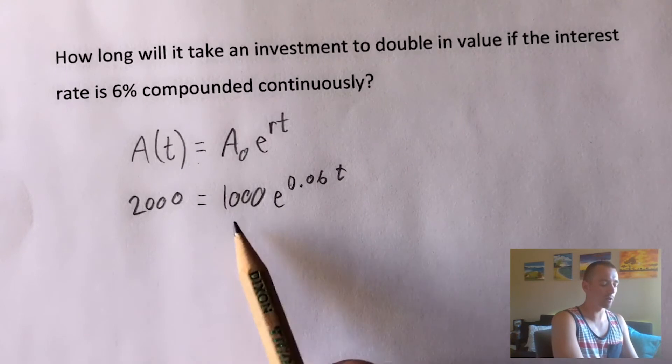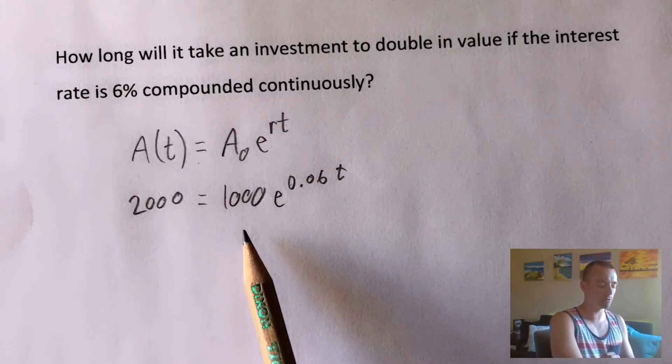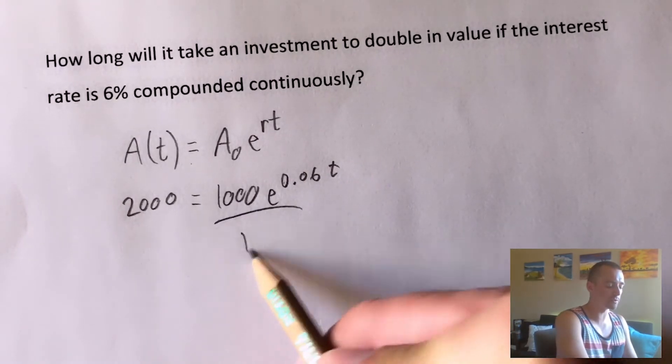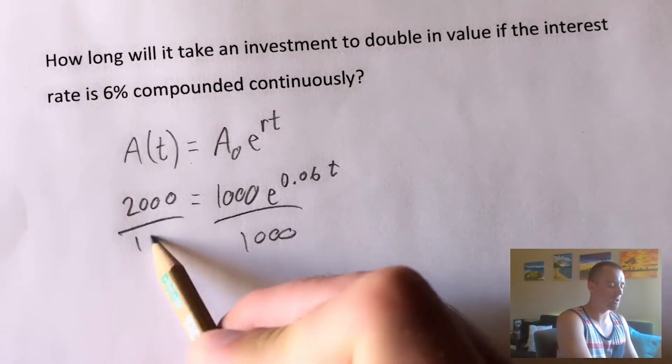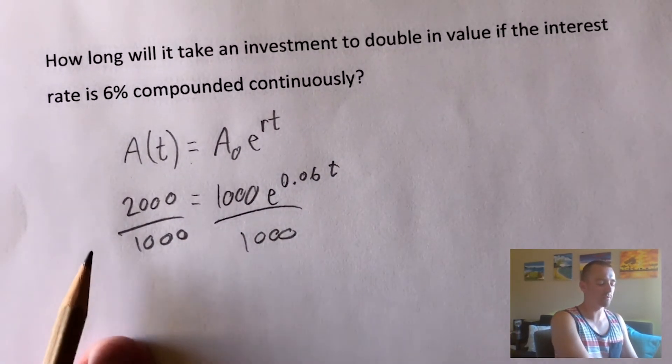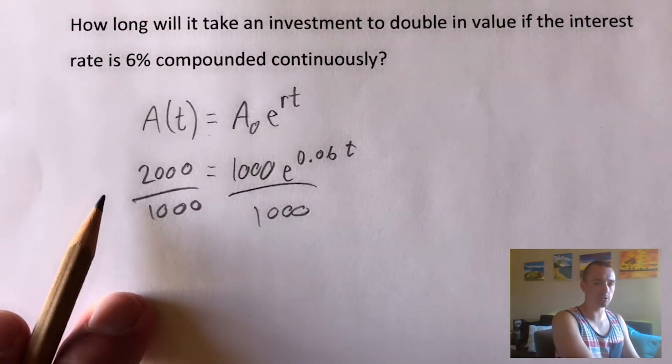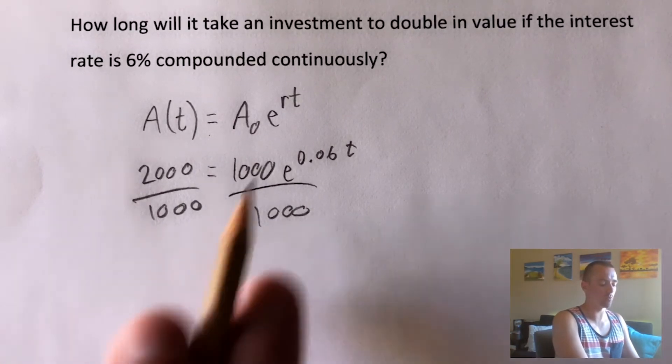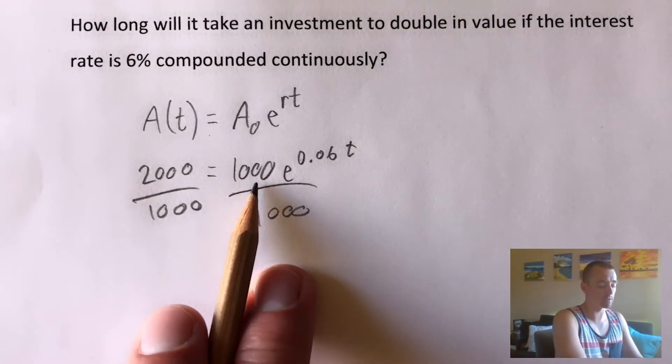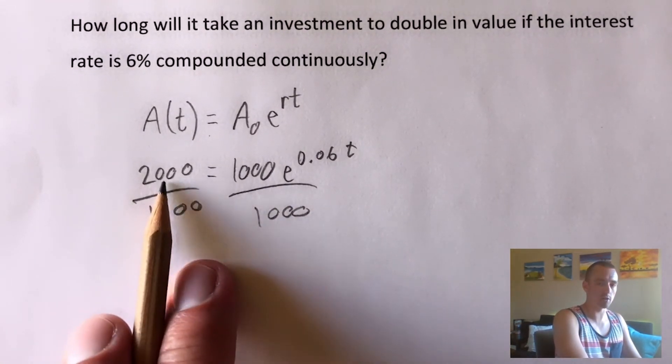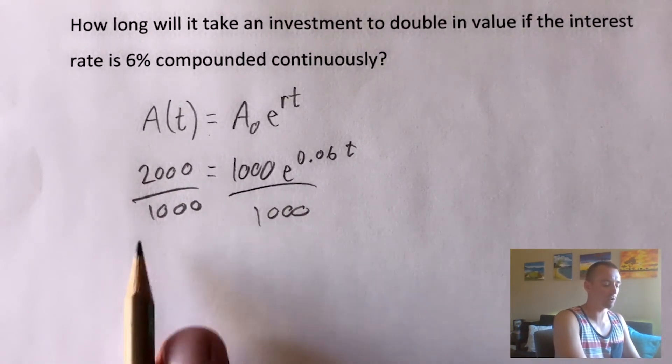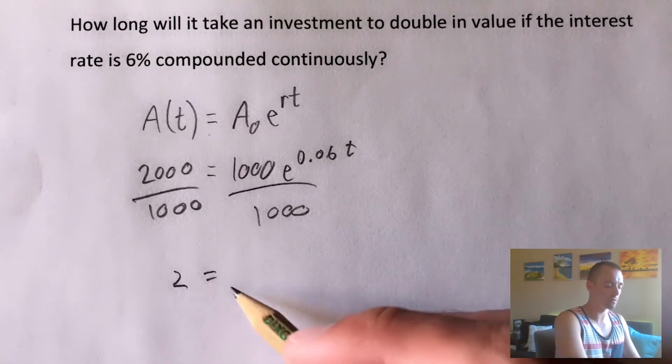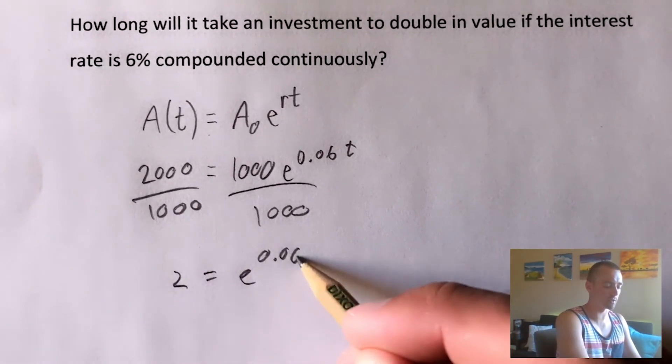So the reason why it doesn't matter what you pick your starting value to be is the first step in solving for t here is going to be to divide both sides of our equation by 1000. And you can see when we do that, the left side of our equation started out as just being twice as much as this initial value that we started with. So no matter what you put for your starting value, we put 1000, as long as you put double that over here to start with, after you divide it over, you're just going to simplify down to 2 equals E to the 0.06t.